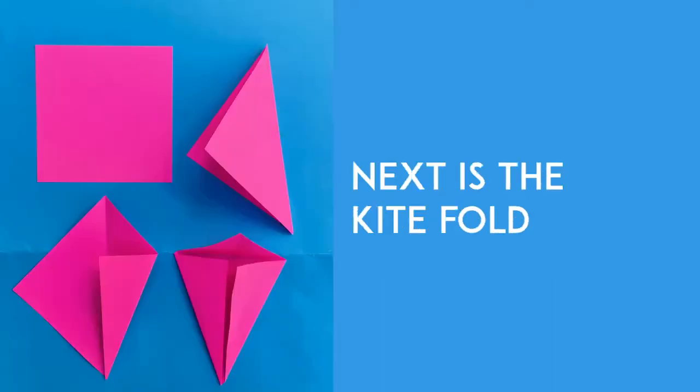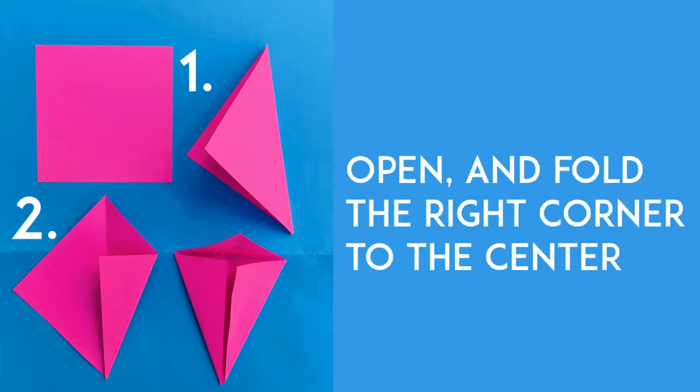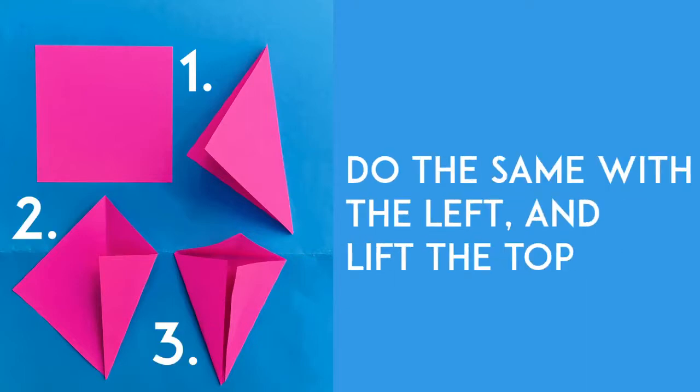Next is the kite fold. 1. Fold in half diagonally. 2. Open, and fold the right corner to the center. 3. Do the same with the left, and lift the top.